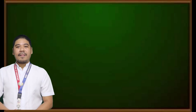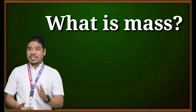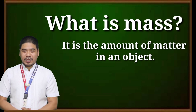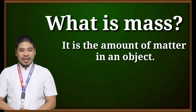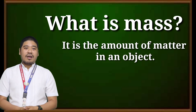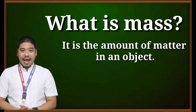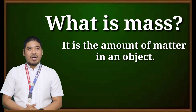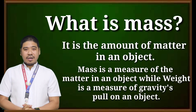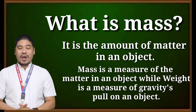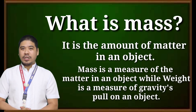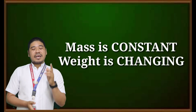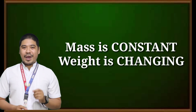Let us also define mass — this is actually a very important term to unlock. Mass is the amount of matter in an object. It is a measure of the matter in an object, while weight is a measure of gravity's pull on an object. Mass is constant, while weight is changing.